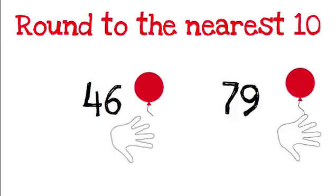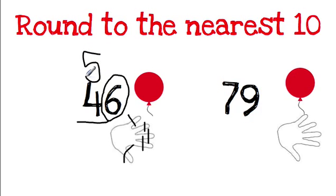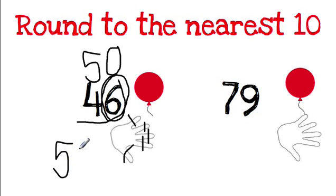Let's try it again. Round to the nearest 10 means I underline the 10s spot and circle the 1s. Holding my balloon, I count my fingers: 1, 2, 3, 4, 5. I don't have to keep going because my balloon is already going up. So even though I have 6, once I hit 5 — let it soar. This 4 goes up to a 5; just add 1. And this becomes a 0. So 46 rounded to the nearest 10 would be 50.